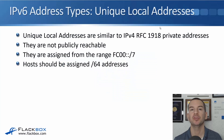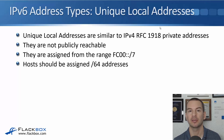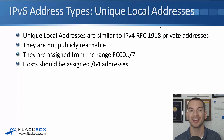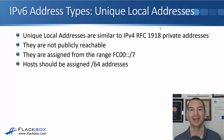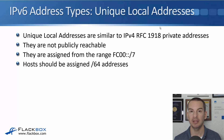In this lecture, you'll learn about Unique Local and Link Local IPv6 addresses. We'll start off with Unique Local. Those are similar to IPv4 RFC 1918 private addresses — so 10.x.x.x, 172.16 to 172.31.x.x, and 192.168.x.x, the private addresses. They are not publicly reachable. They are assigned from the range FC00::/7.